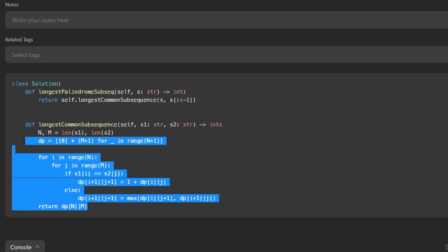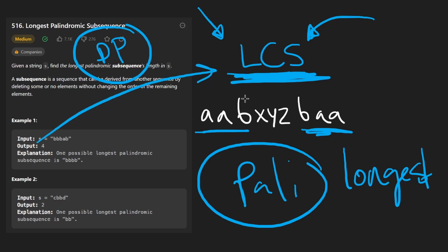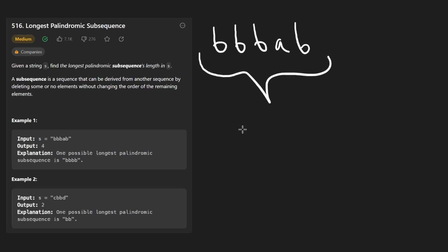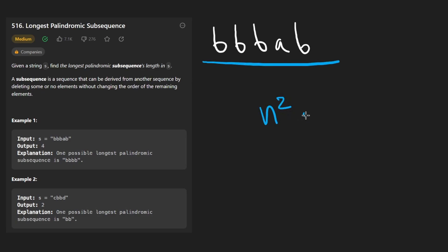Now if you want a deeper understanding of this algorithm, I have a full video on it. Let me show you a different way to solve this problem. It's also going to be a dynamic programming approach, and we're going to borrow a lot from LCS. We'll also borrow ideas from LeetCode problem five — longest palindromic substring. The idea is that instead of checking all N² substrings and verifying palindromes (which is O(N³)), there is a more efficient way.